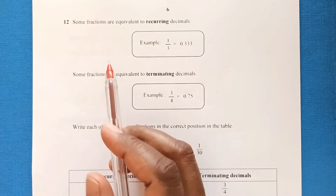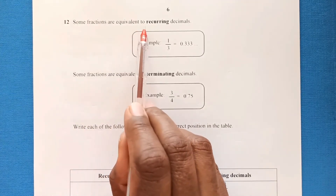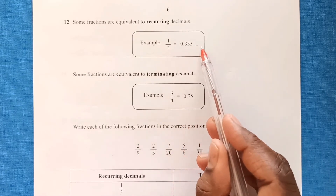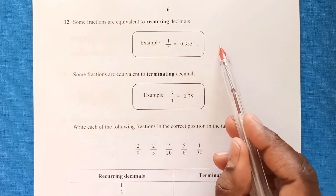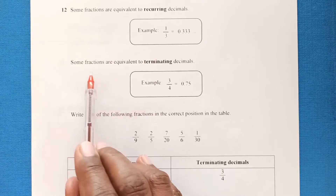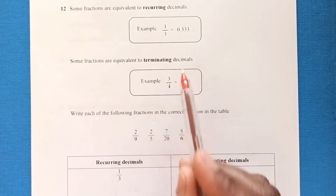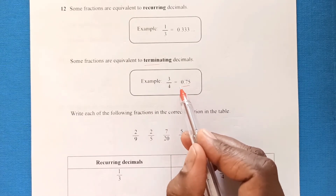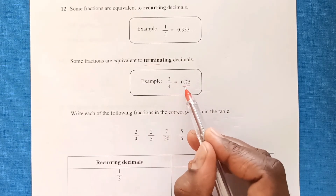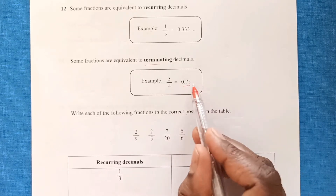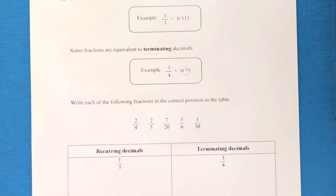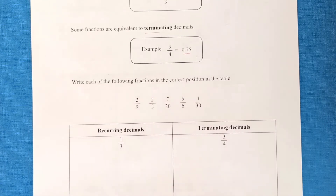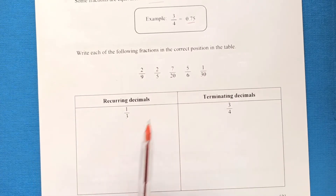Question twelve: some fractions are equivalent to recurring decimals — for example, 1/3 = 0.333... where the digit repeats. Others are equivalent to terminating decimals, which end at a certain point — for example, 3/4 = 0.75. We must place each given fraction in the correct column of the table.